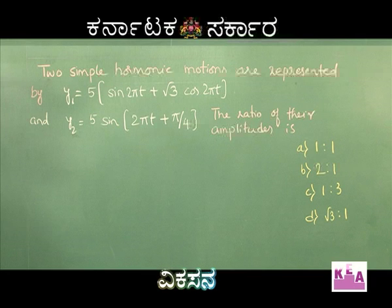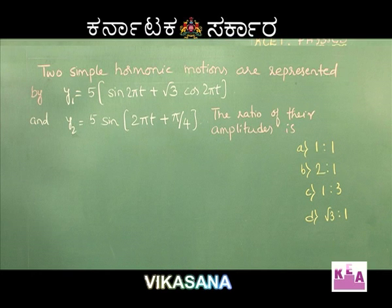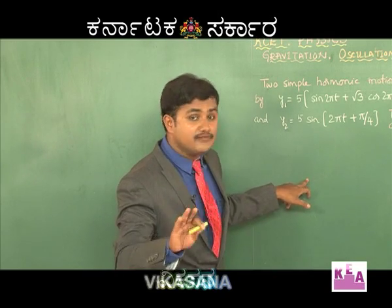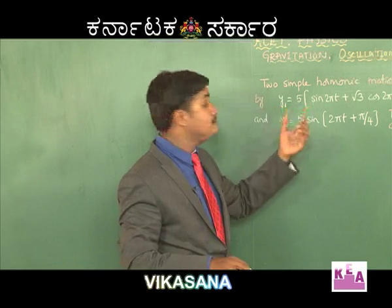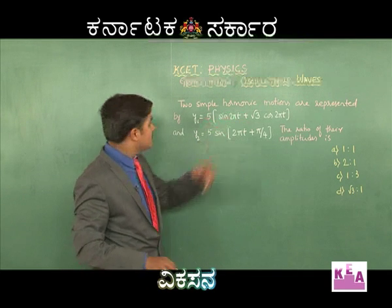Let us look at the two displacement equations. Are they in the standard form? The second equation is obviously in the standard form A sin(omega t + phi). But the first equation is not in the standard form. Most students tend to treat the coefficients as amplitudes and write the ratio as 1:1, which is wrong. So you have to get the first equation into the standard form A sin(omega t + phi).